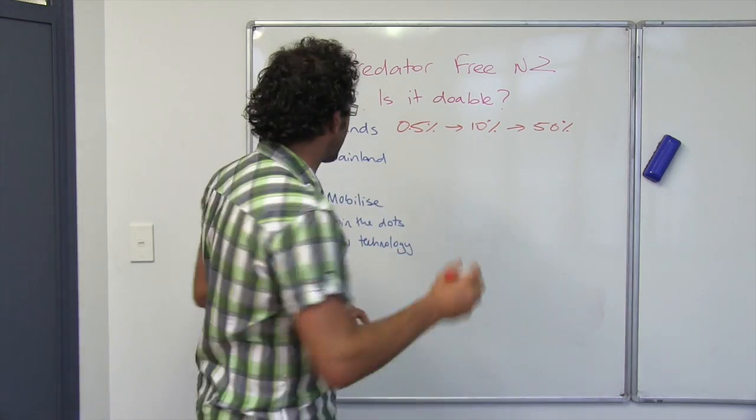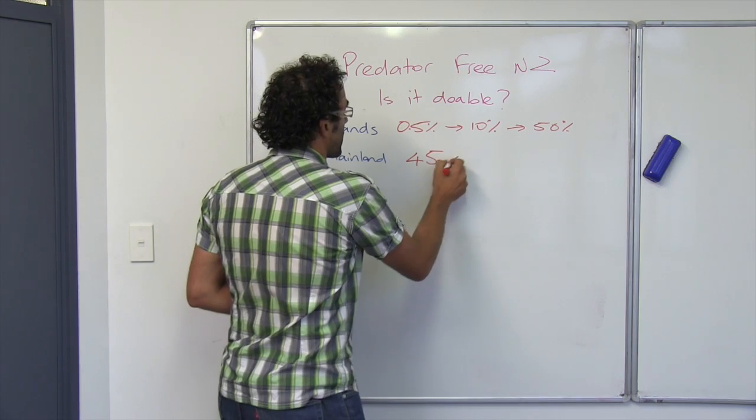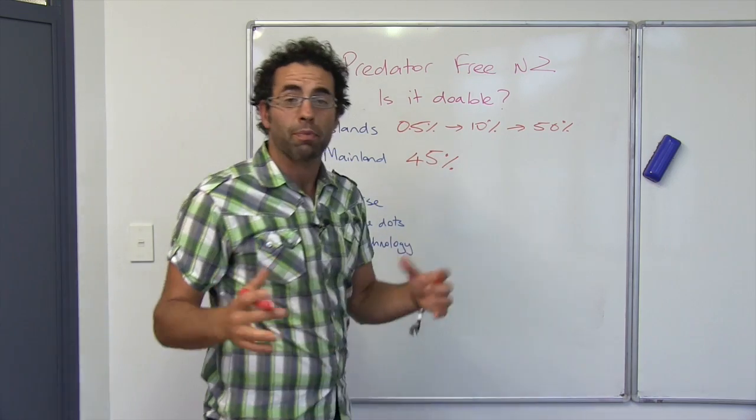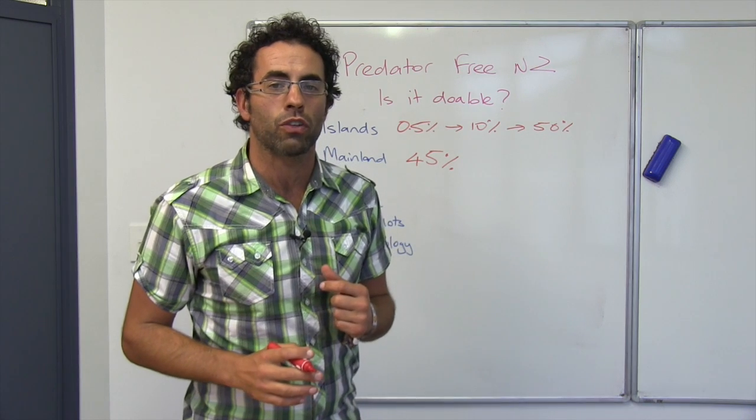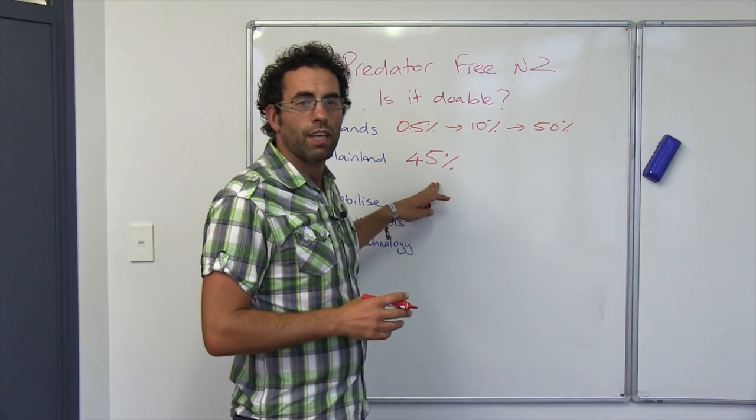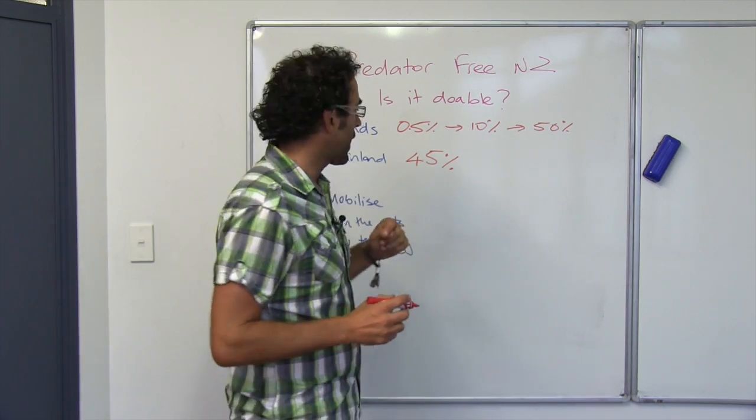But of course, mainland New Zealand is where the action is at. And amazingly, around about 45% of mainland New Zealand is currently under some sort of predator control. But that only happens every two or three years and that's control, not eradication.